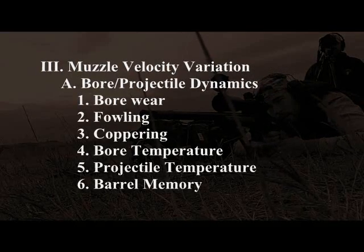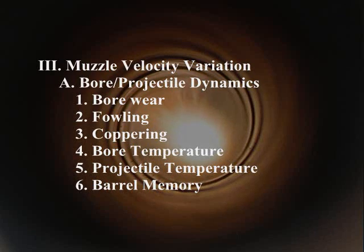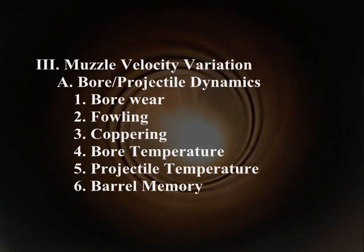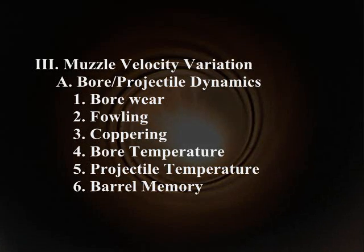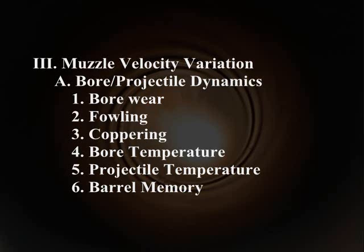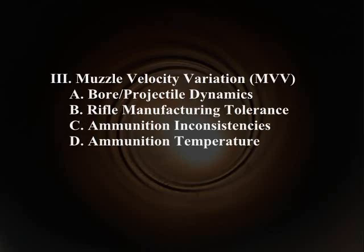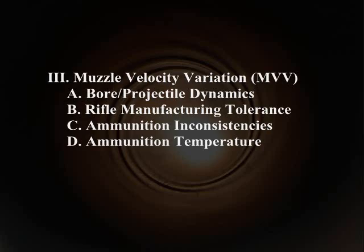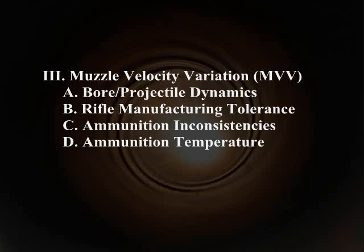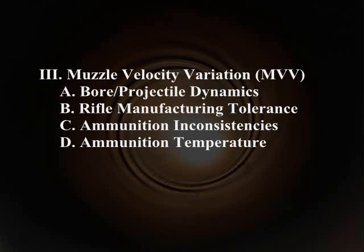You're going to have to properly maintain your weapon system to keep it consistent with how you zeroed it when setting up your charts. Bore temperature and projectile temperature can change how slippery a bullet goes down the bore. There are also things like barrel memory that come into play. Another thing affecting muzzle velocity variation is rifle manufacturing tolerances — I'm going to talk about chamber dimensions and how those can affect muzzle velocity.